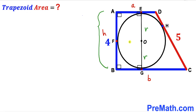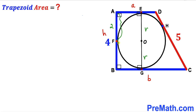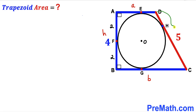Therefore, the height AB equals the diameter of the circle. Since the height is 4, the diameter is 4, and therefore the radius r is half of that — r = 2. Likewise, the segment BF is also 2 units.